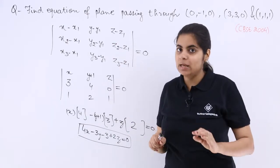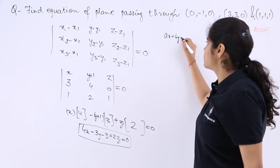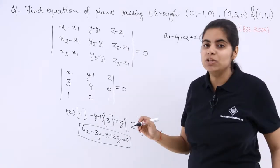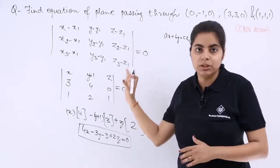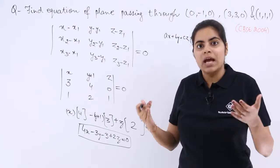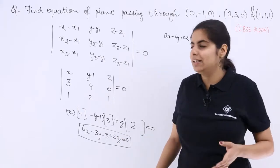The other methodology again I am telling would be what? That you write general equation of plane is ax plus by plus cz plus d equal to 0, then equation of plane passing through the first point, through the second point, through the third point, then cross multiply to remove the constants a, b, c and then obtain the final equation by just putting the values. So that is very tedious.